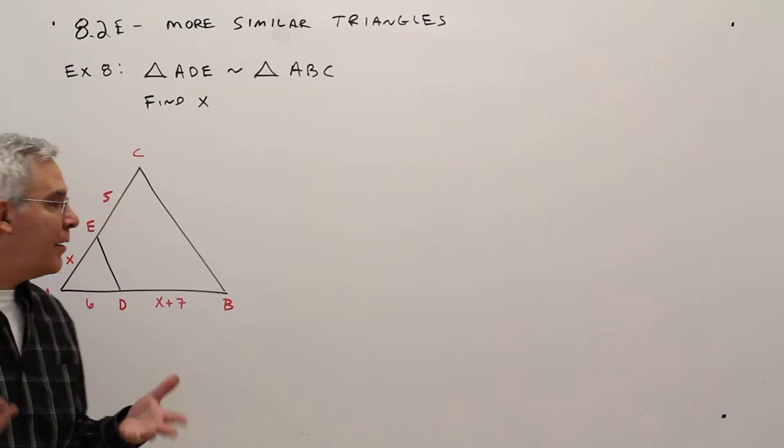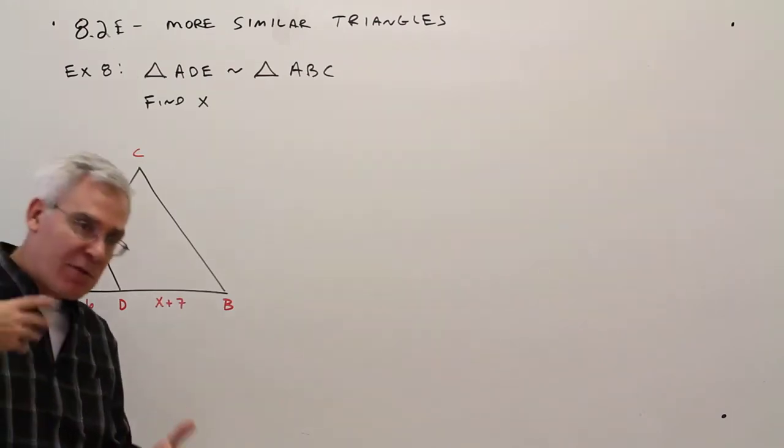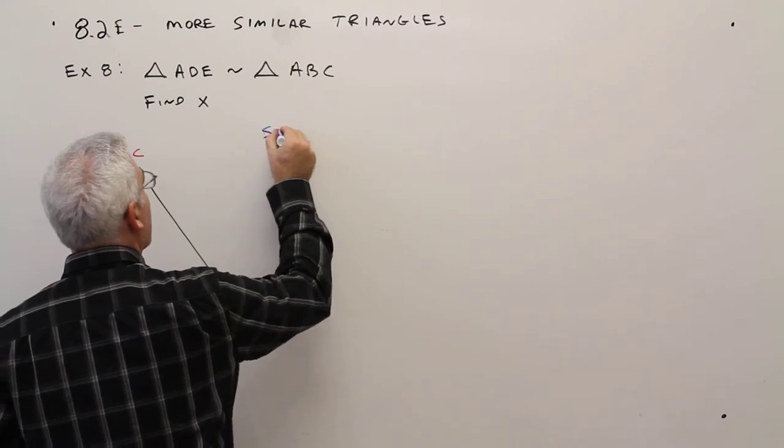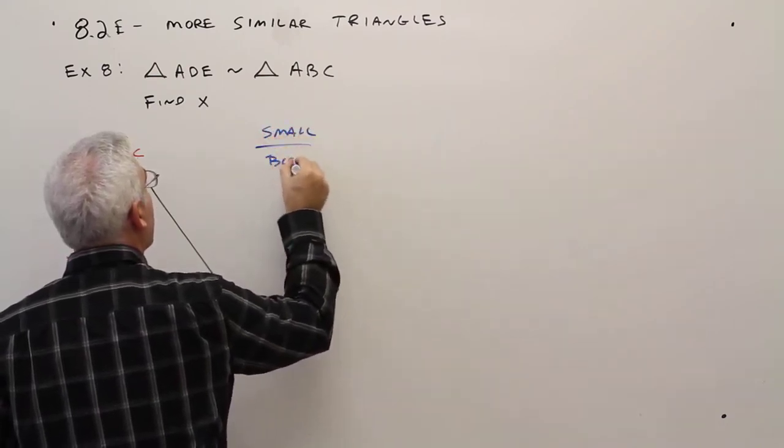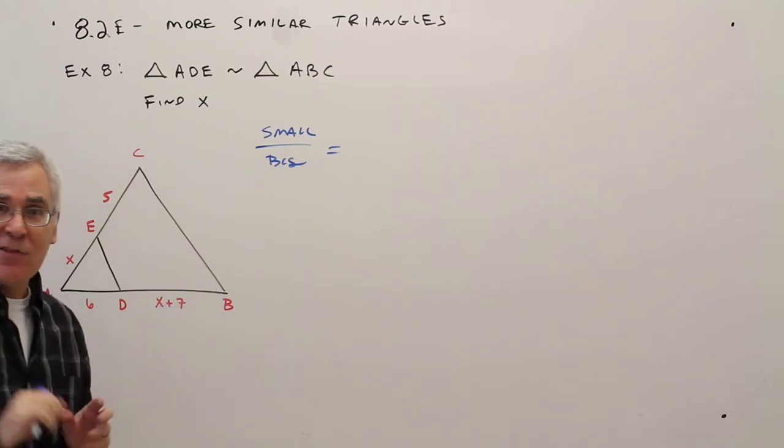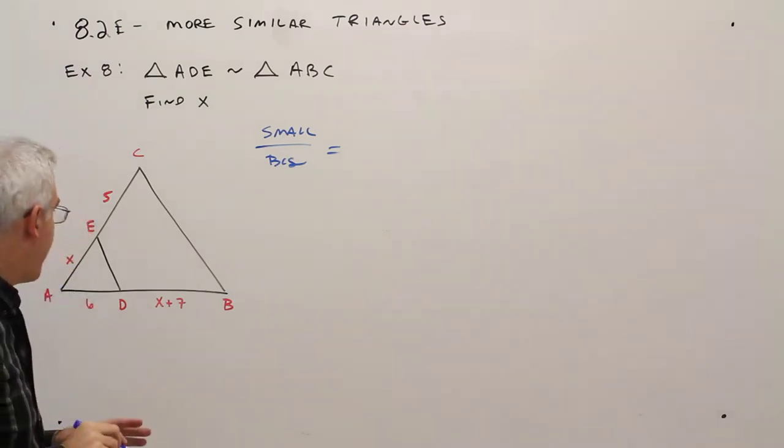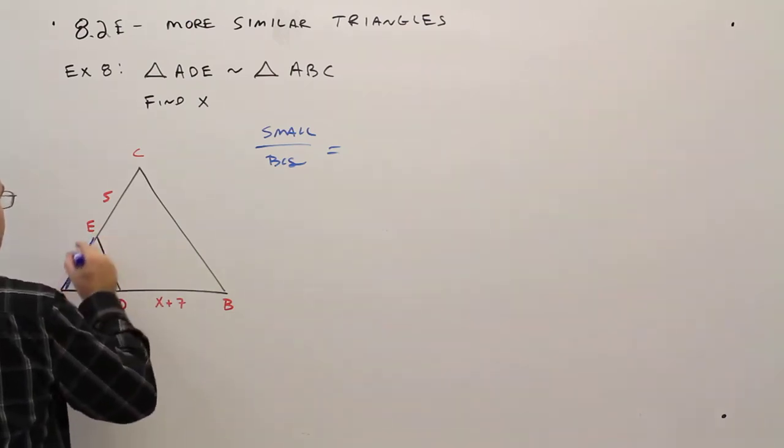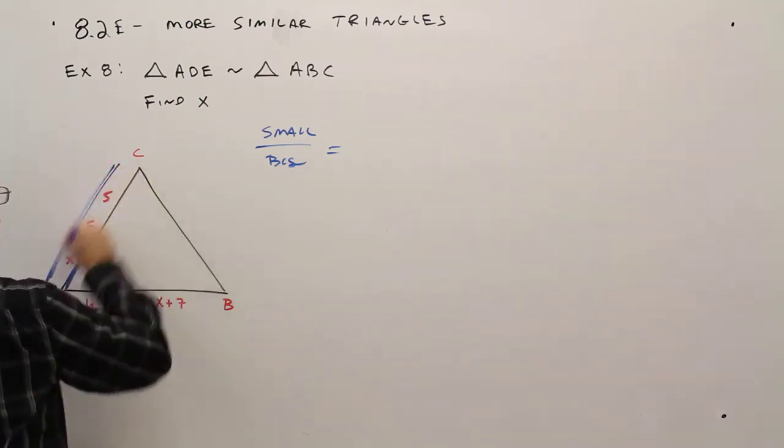Once again I just like to say small triangle over big triangle. So small triangle over big triangle and let's see if I can get some kind of corresponding ratio. Alright so I've got X is to X plus 5.